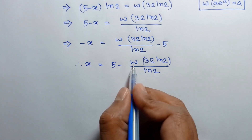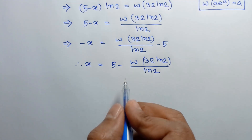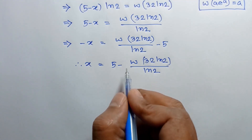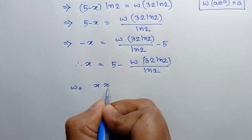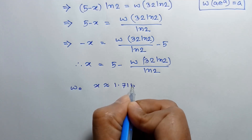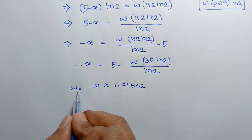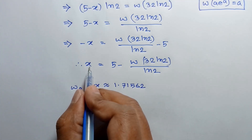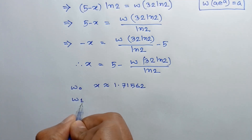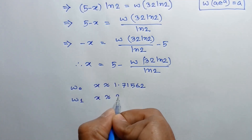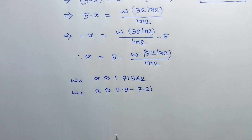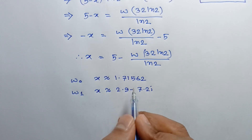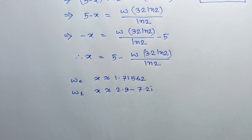The Lambert W function is a multi-valued function; the suffix of W can be any integer. For W sub 0, the approximate value of x is 1.71562. For other values of W, there are complex solutions — for example, for W sub 1, the approximate value of x is 2.9 minus 7.2i. So the only real solution of this equation is x ≈ 1.71562. If you like this video, please subscribe to my channel. Thanks for watching.